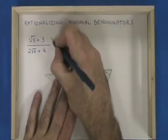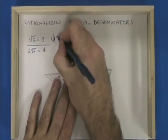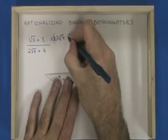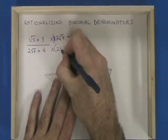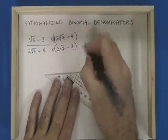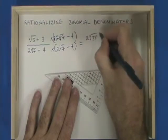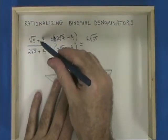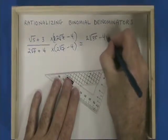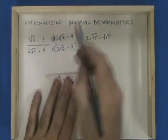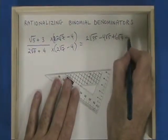I am multiplying both top and bottom of this expression by 2 root 7 minus 4. Root 5 times 2 root 7 is 2 root 35. Root 5 times negative 4 is minus 4 root 5. 3 times 2 root 7 is plus 6 root 7. And 3 times negative 4 is minus 12.